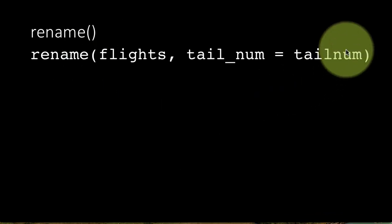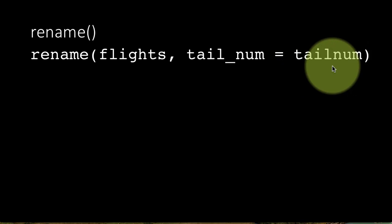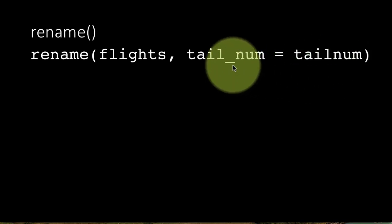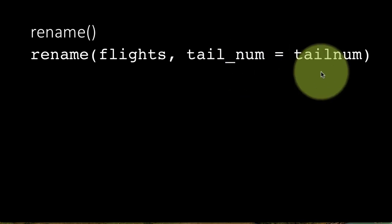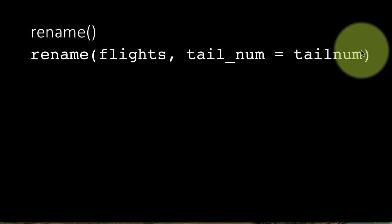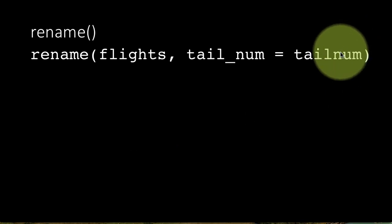So here there is a column called tailnum in the table already and we want to rename it as tail underscore num. The reason we want to do this renaming is that every other column like for example arrival delay, departure delay, scheduled departure time etc. In all of those column names the individual words are separated with underscores. Just for whatever reason this column alone is not following that convention and we are saying let's just do that.